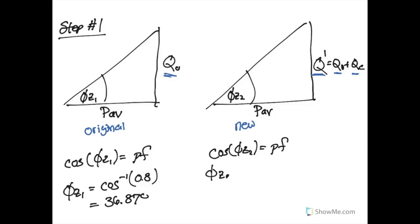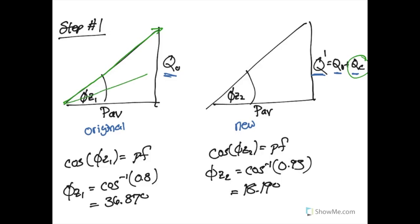Our new power factor target is 0.95, so the new phase angle is going to be 18.19 degrees. This means we need to add enough capacitance to drop the phase angle from roughly 36.87° to 18.19°, a reduction of about 20 degrees.